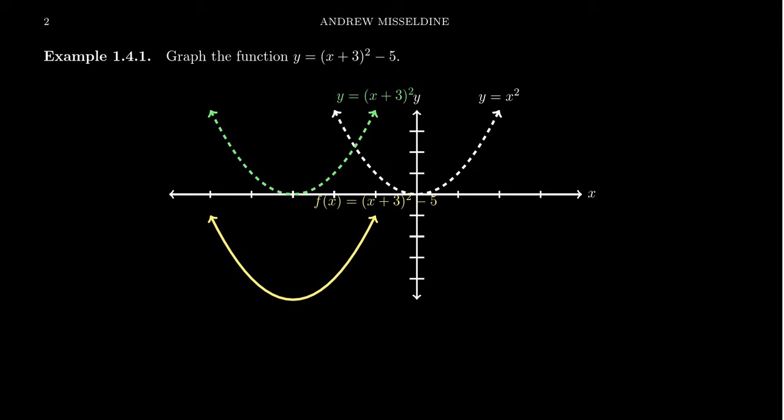The first thing to recognize here is that there's graph transformations involved with this thing, but we have to first identify what is the basic graph in play here. What is the basic graph? If we ignore all of the transformations, what's left? Like if we ignore this minus 5,